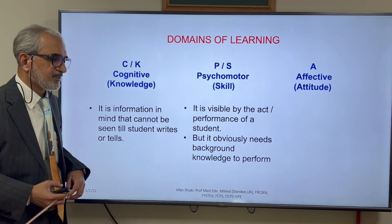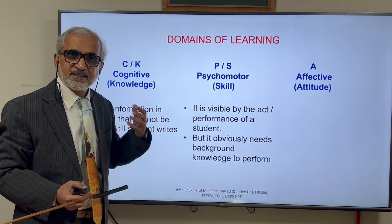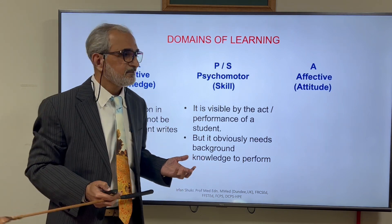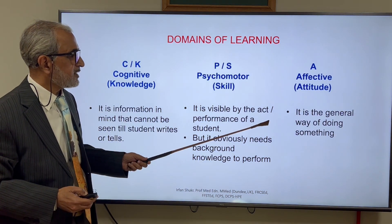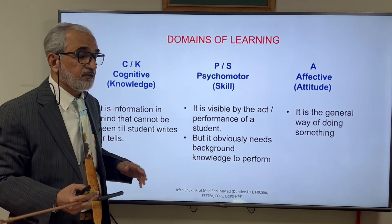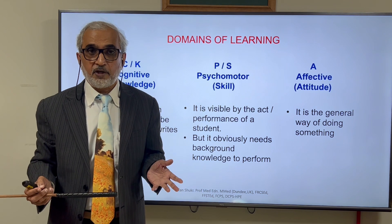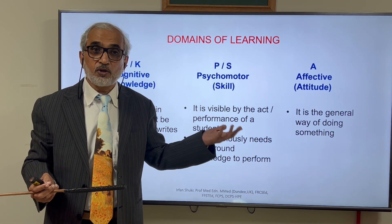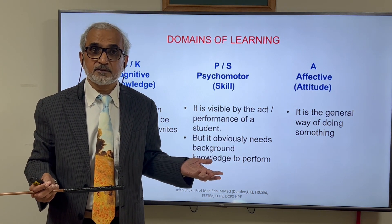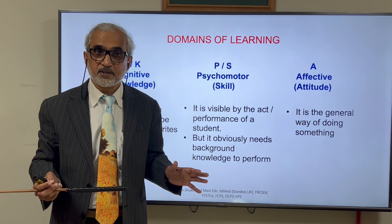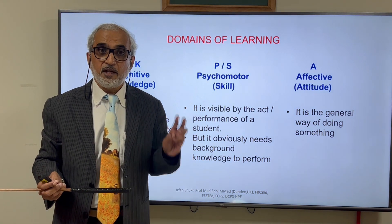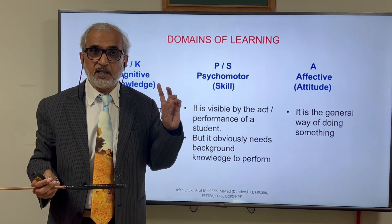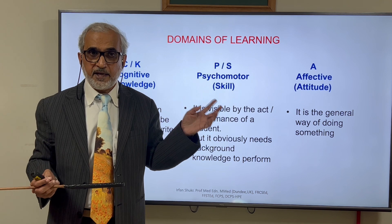Psychomotor skill obviously needs a background of knowledge. Affective is a general way of doing something, and obviously this also has knowledge in the background. That is understood. So therefore, the three domains of learning are knowledge, skill, and attitude.